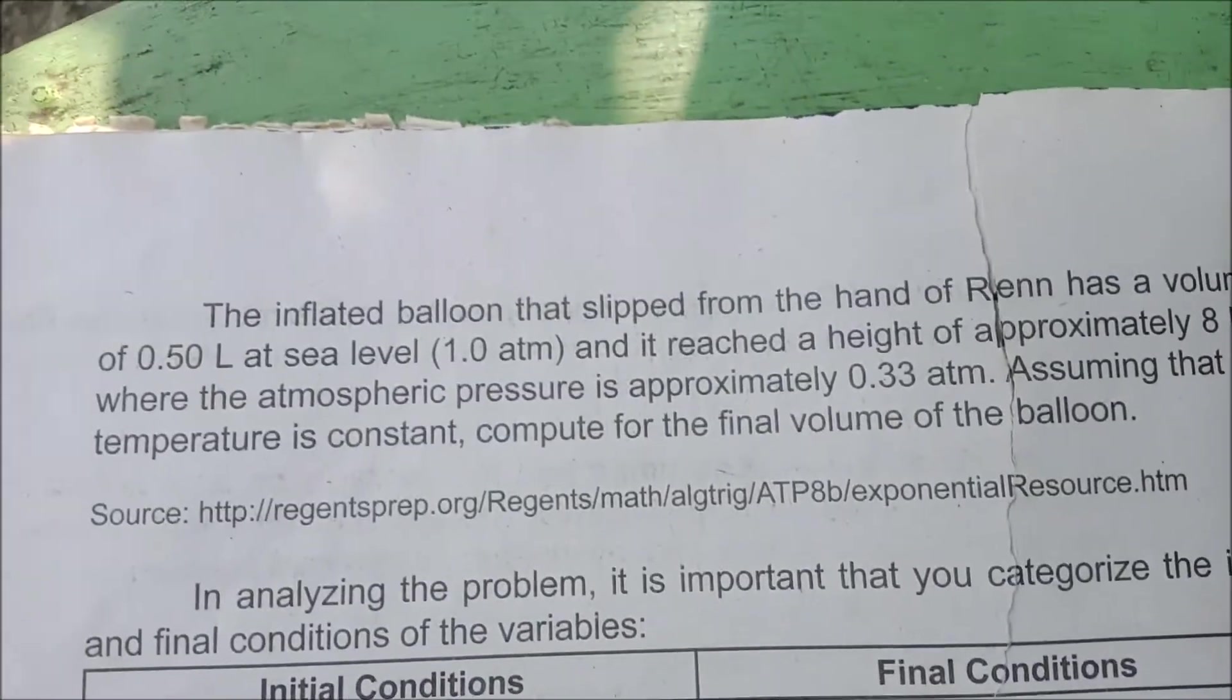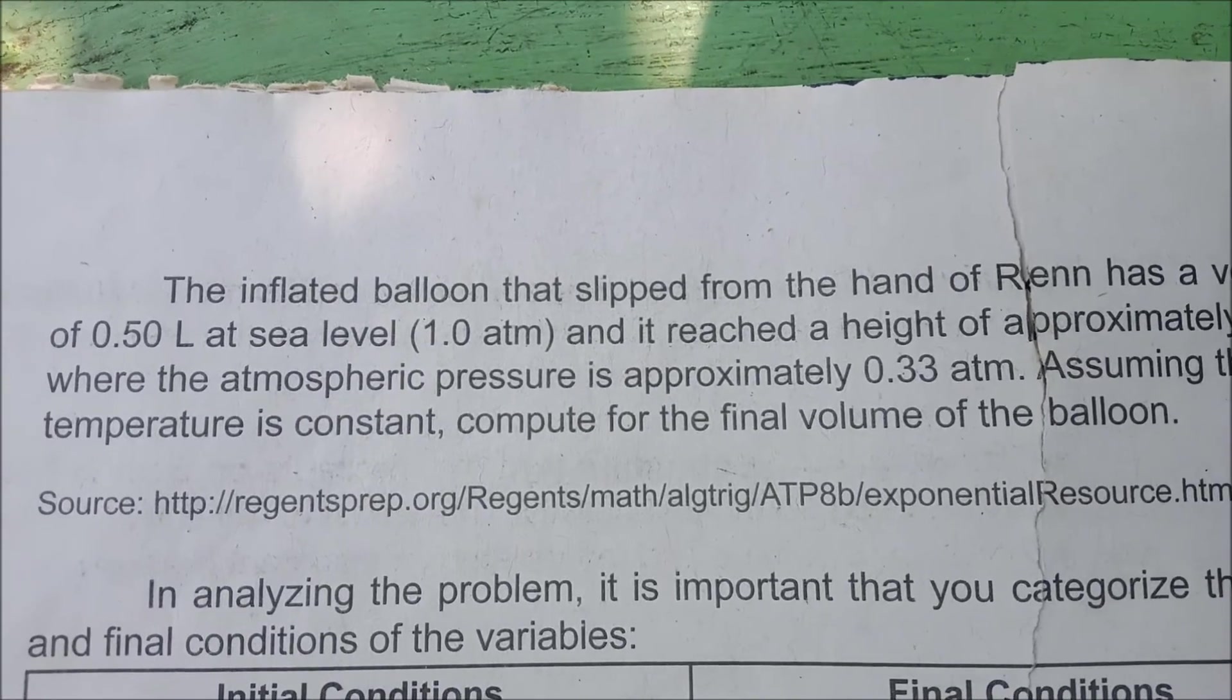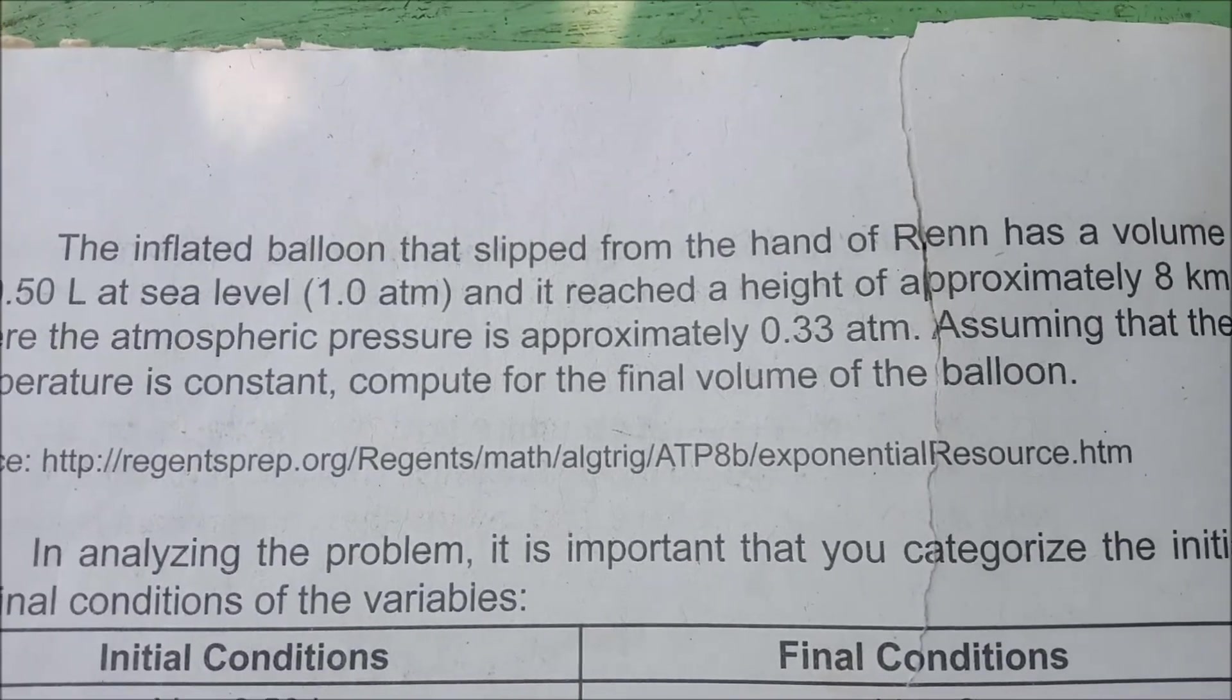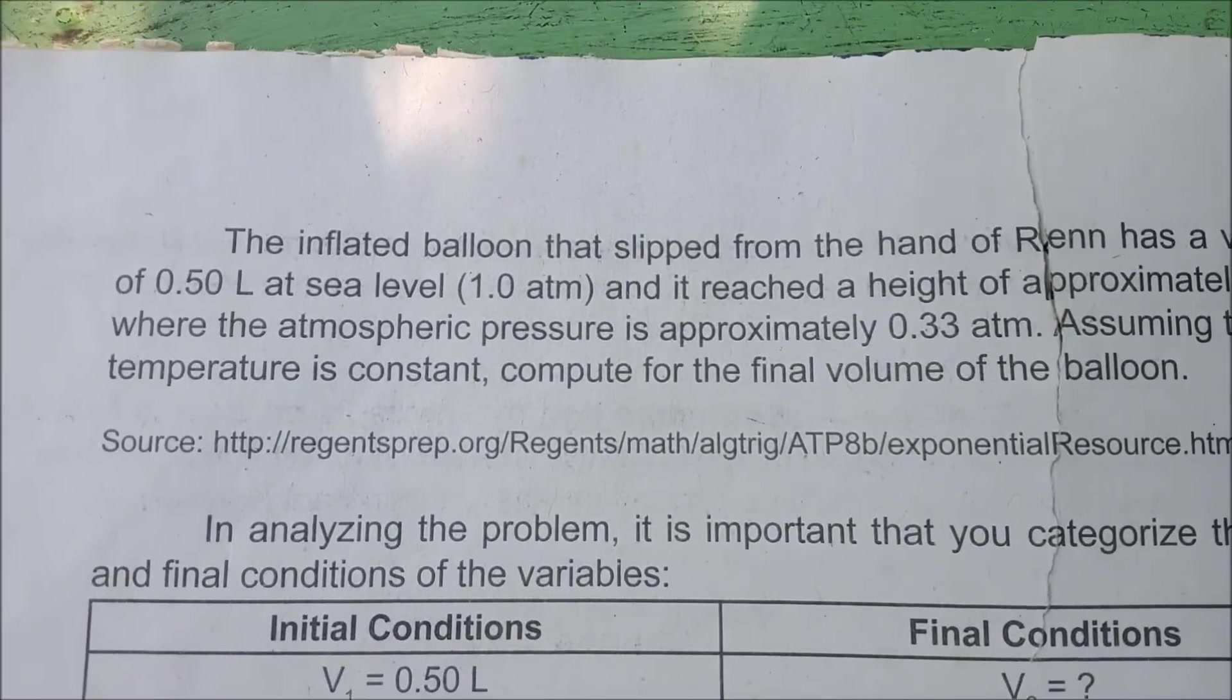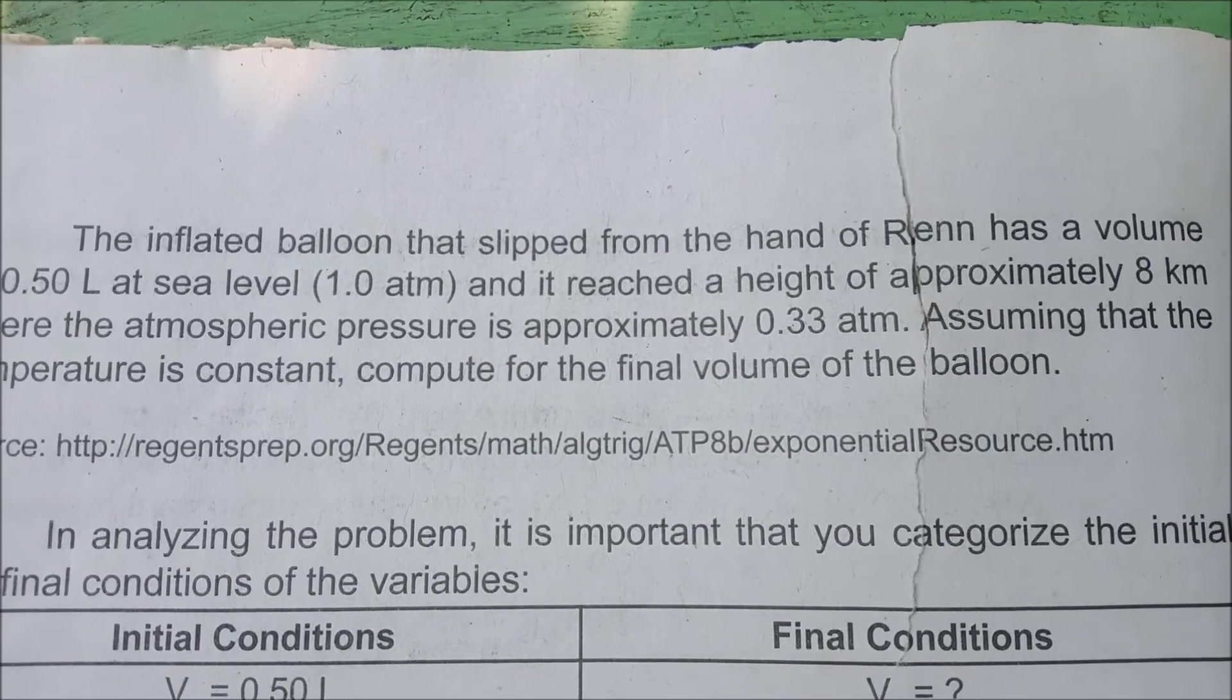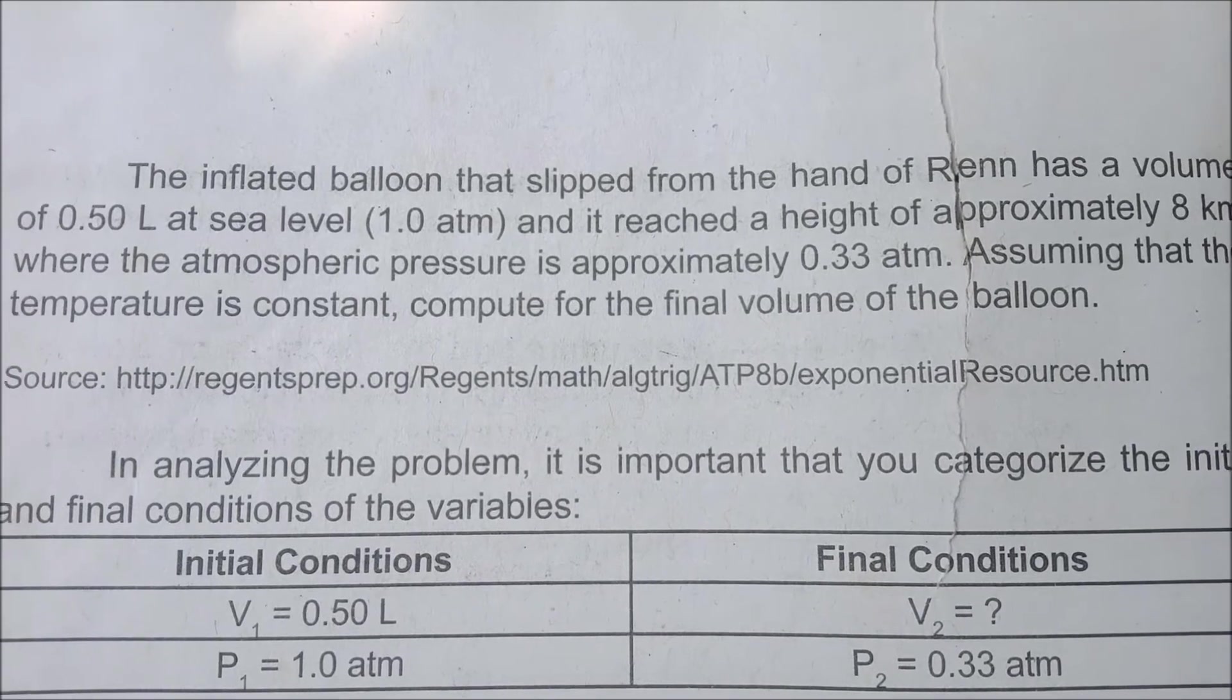Found in your book is the sample problem. Let's read it. The inflated balloon that slipped from the hand of Wren has a volume of 0.50 liter at sea level. And it reached a height of approximately 8 kilometer, where the atmospheric pressure is approximately 0.33 atmosphere. Assuming that the temperature is constant, compute for the final volume of the balloon. What are given in your problem, you have V1, which is 0.50 liter at pressure, 1 atmosphere.